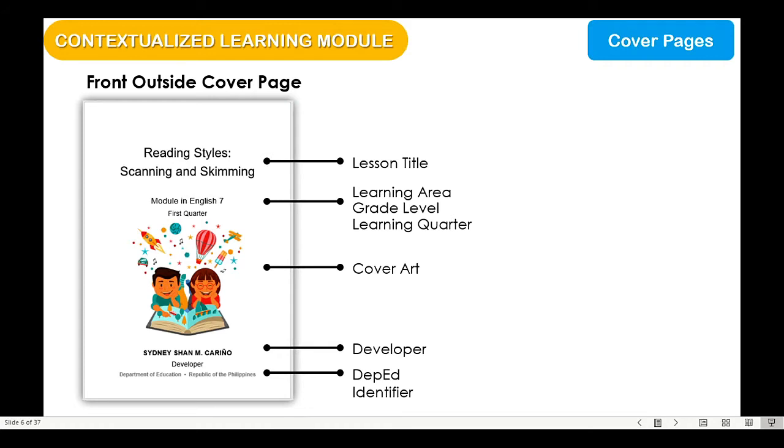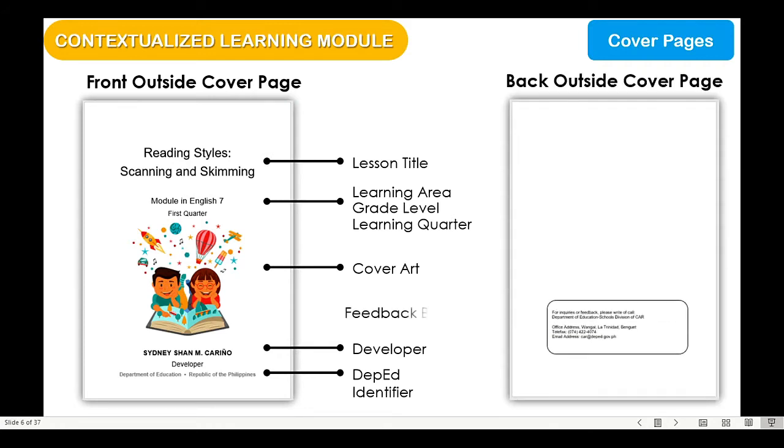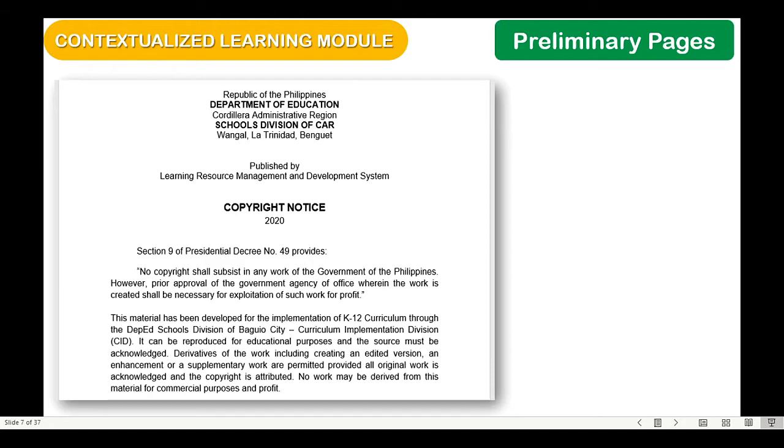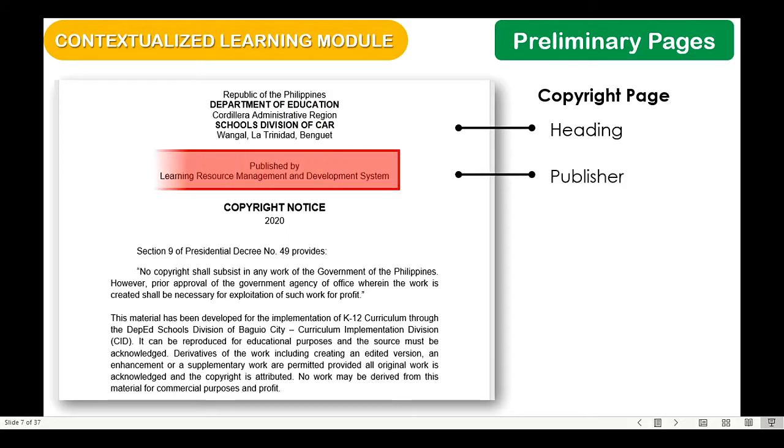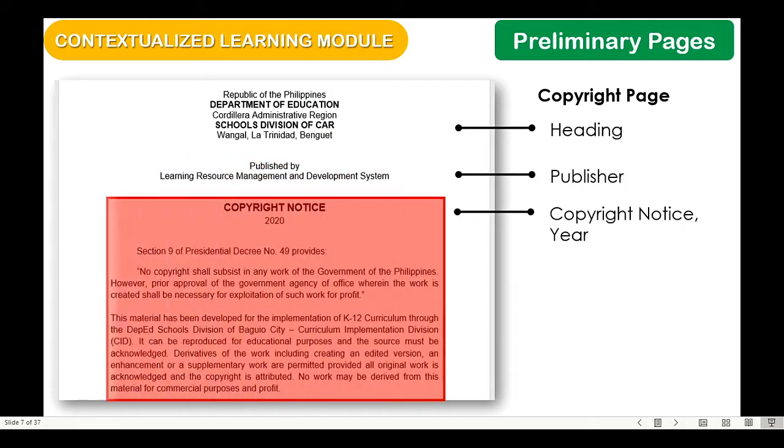For the back outside cover page, you will only find the feedback box. Now let us look at the inside pages starting with the preliminary pages. The first is the copyright page. Here you'll find the heading, the publisher and the copyright notice including its year.